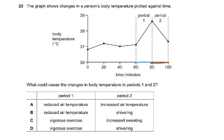Period one can't be 'reduce the air temperature' — your temperature is maintained even if you enter a cold or hot room. The answer is C: period one is vigorous exercise, and period two is sweating, which involves the latent heat of vaporization — when sweat evaporates it cools the body down. Shivering would only occur if placed in something very cold.